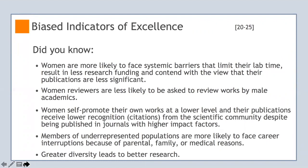Research has shown that underrepresented groups such as women are more likely to face systemic barriers, such as more expectations to sit on committees that limit their lab time, result in less research funding, and contend with the view that their publications are less significant. In addition, women face less integration into the scientific community, such as holding positions and memberships in scientific associations and on the editorial boards of journals, resulting in them publishing 20% fewer publications than men in the natural sciences, despite being equally qualified.